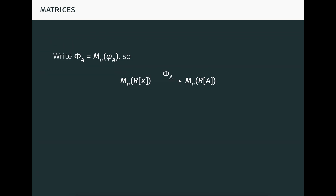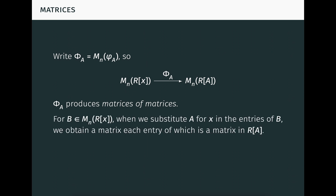To see why, we focus attention on the arrow on the left of the diagram going down, which we denote by big Phi_A. It performs element-wise substitution of A. But this means it produces matrices of matrices, that is, matrices whose elements are matrices, not to be confused with block matrices. For B a matrix of polynomials in x, when we substitute A for x in the entries of B, we obtain a matrix, each entry of which is a matrix.